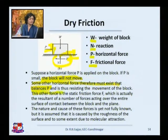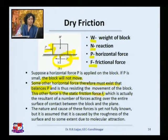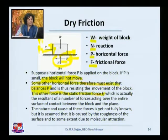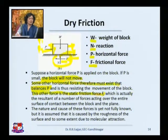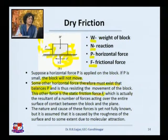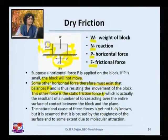This other force is the static friction force F. So far it is only static — it is resisting. It keeps on resisting. Supposing we keep on increasing P — P1, P2 — keep on increasing P as much as you can. Finally, after a certain value of P, the body will slightly move forward. Because the roughness of the two surfaces, which was generating the frictional force F, is now no more able to balance P. The frictional force due to the roughness is less compared to the external horizontal force being exerted.